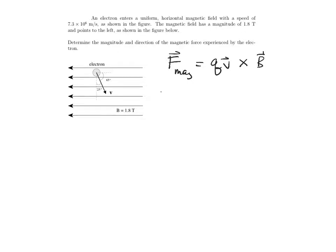Now, for this particular example, B points off to the left, and V points down to the lower right, and the angle between them is 115 degrees.